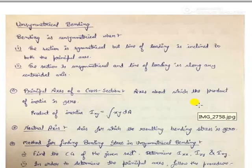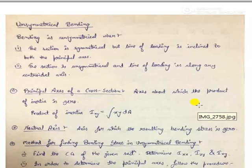Coming to our first topic, unsymmetrical bending: as you might be aware of the theory of simple bending from strength of materials, bending is basically a phenomenon caused due to vertical loading. In general for simple bending, there was only one directional loading, but in certain practical problems you might have loading in two different directions. In order to analyze the effect of those two loads, we need to understand how these bendings occur.